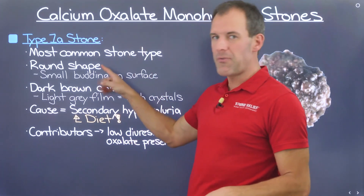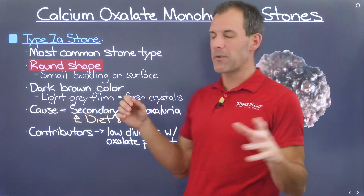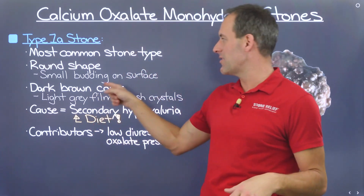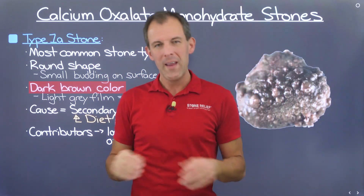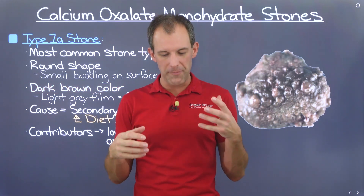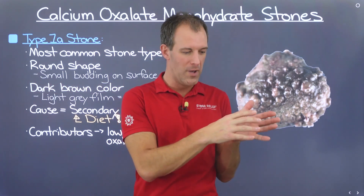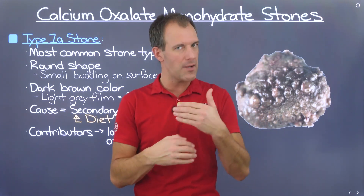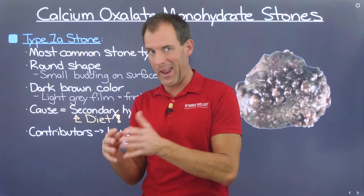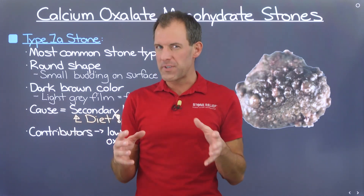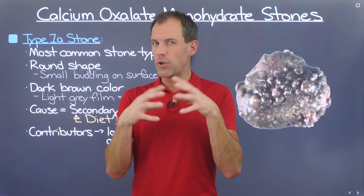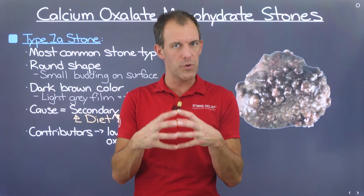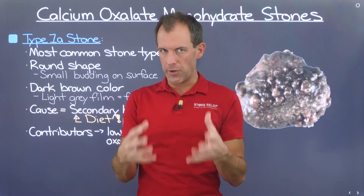This stone is defined by its round shape, with small little budding across the surface, and generally they're dark brown in color. This dark brown color is really due to the fact that these stone types form intermittently — there's an on-again, off-again type of crystallization and aggregation occurring, and urine pigmentation gets caught up in these crystals, which over time build up and get darker and darker.